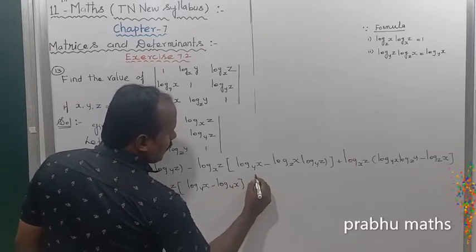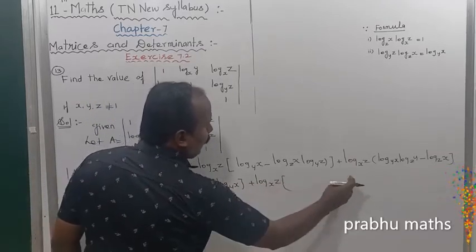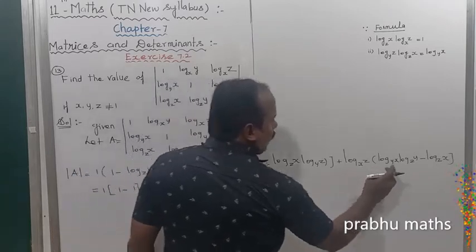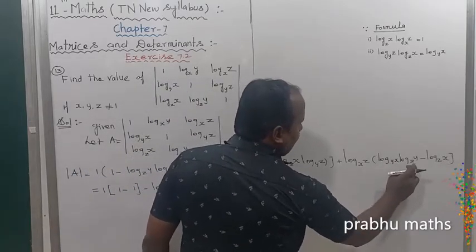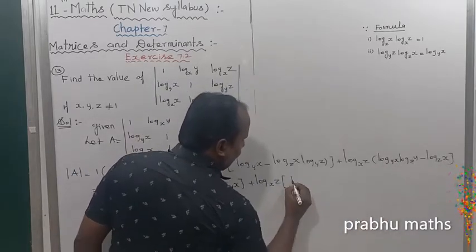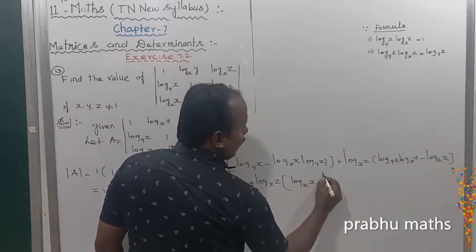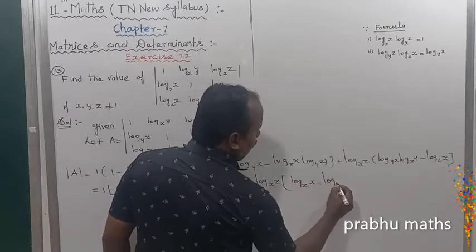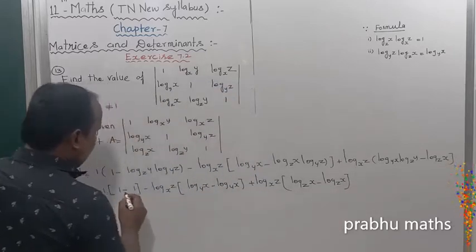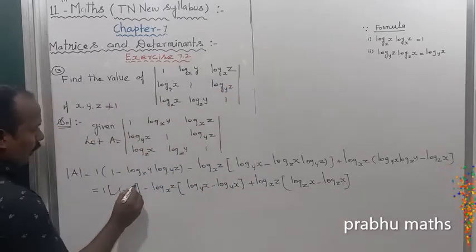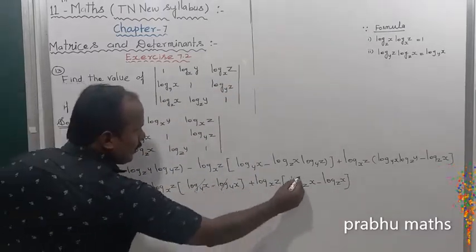Plus log x z into — so the first one, the base value, next this value, that is x z — log base z into x, this is called log base z into x. So this one is going to cancel, this is also cancel, this is also cancel.